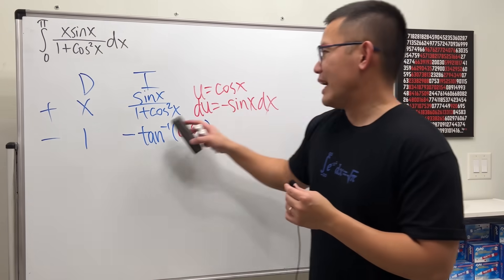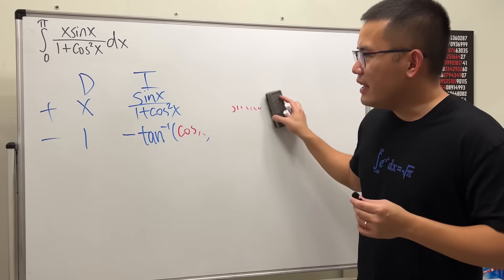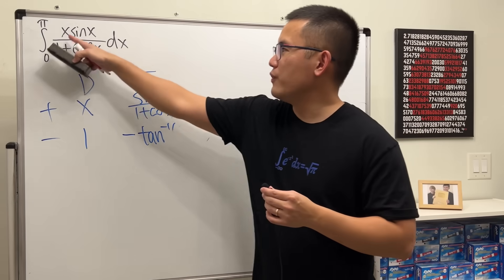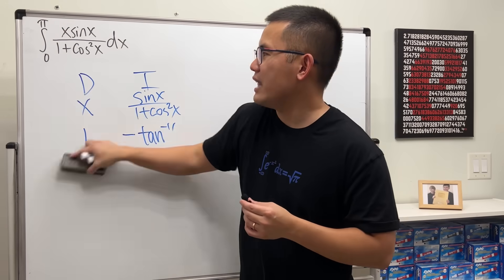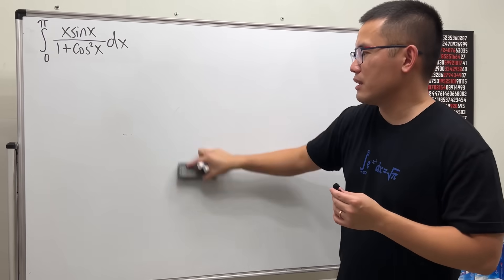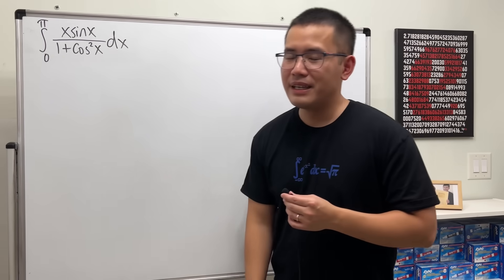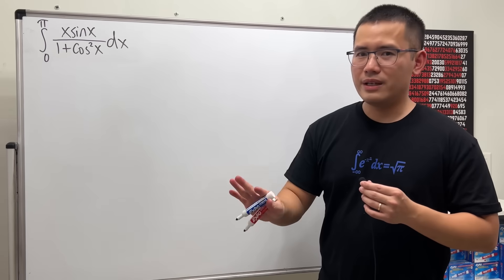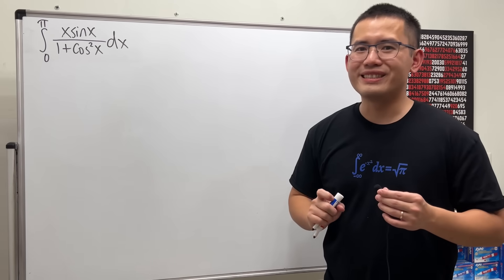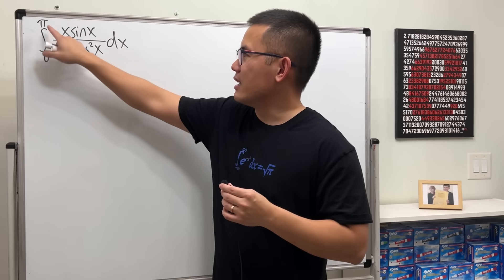I don't think it's possible to find an antiderivative for that integrand and then plug in π and 0 and subtract. But don't worry — I'll tell you the secret. Notice this is a definite integral.